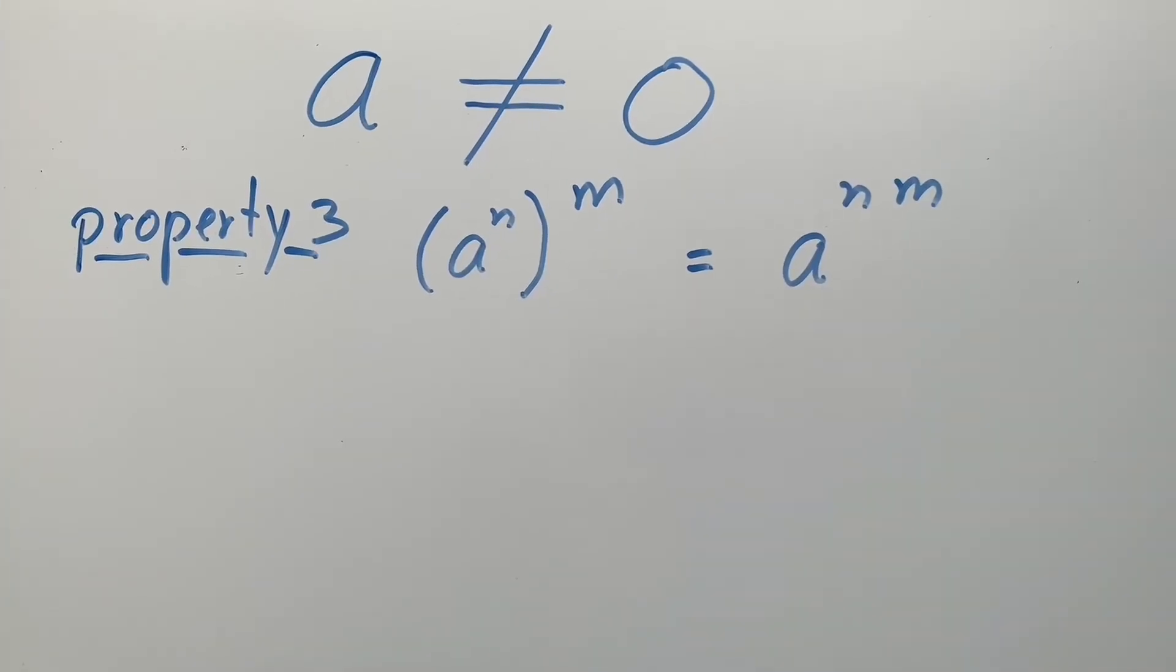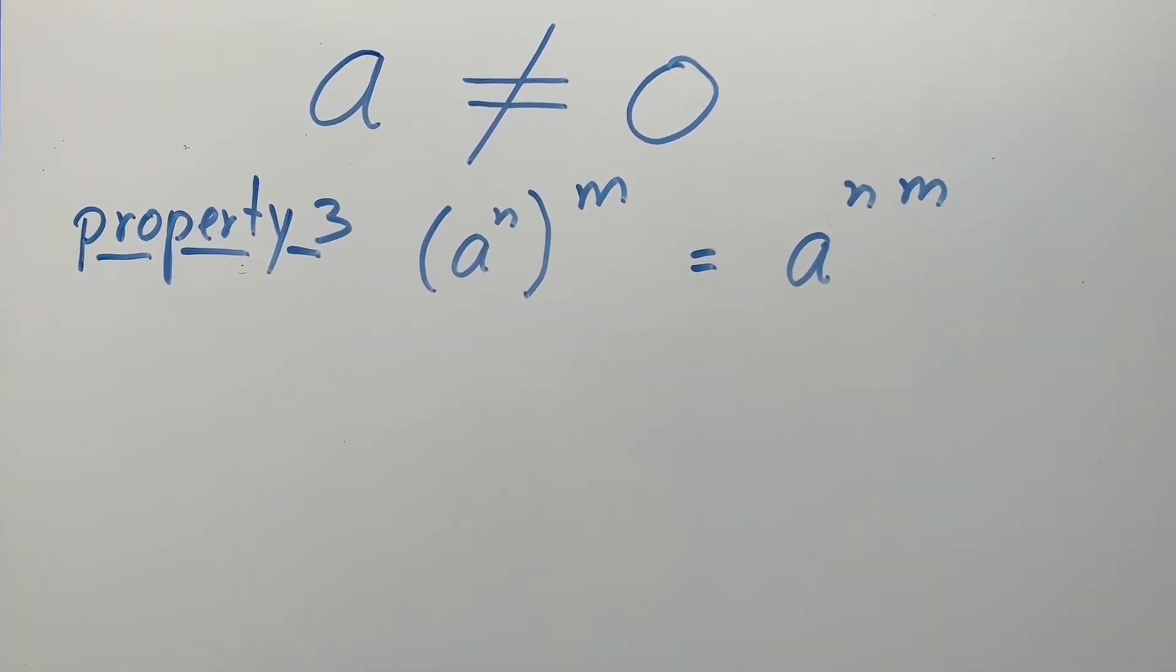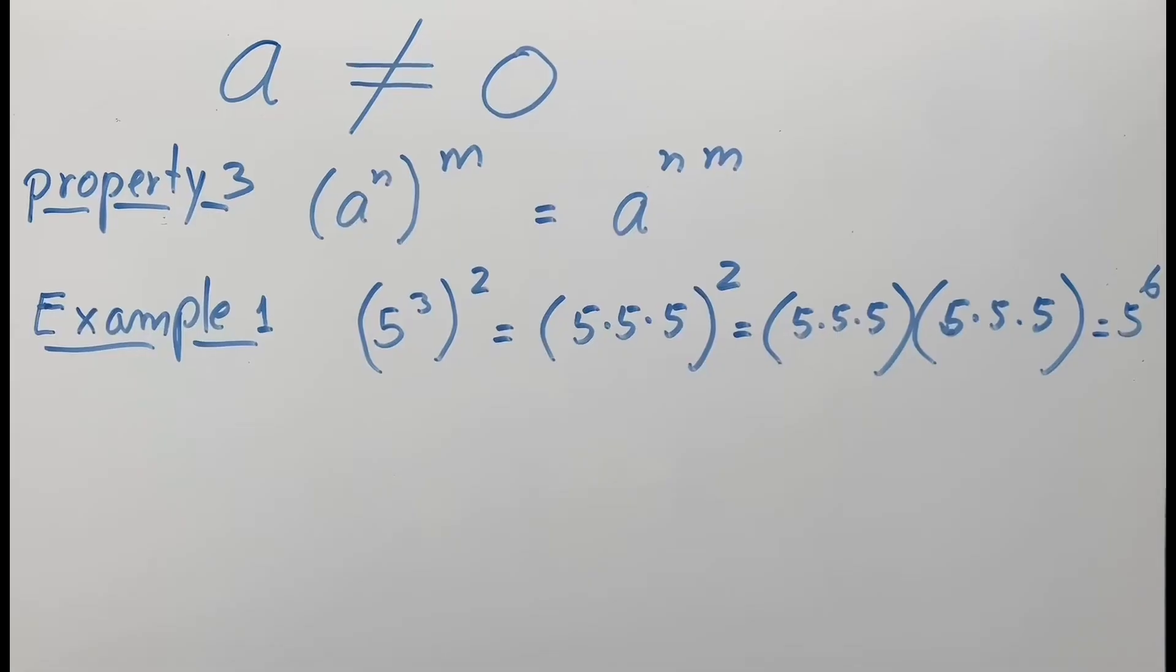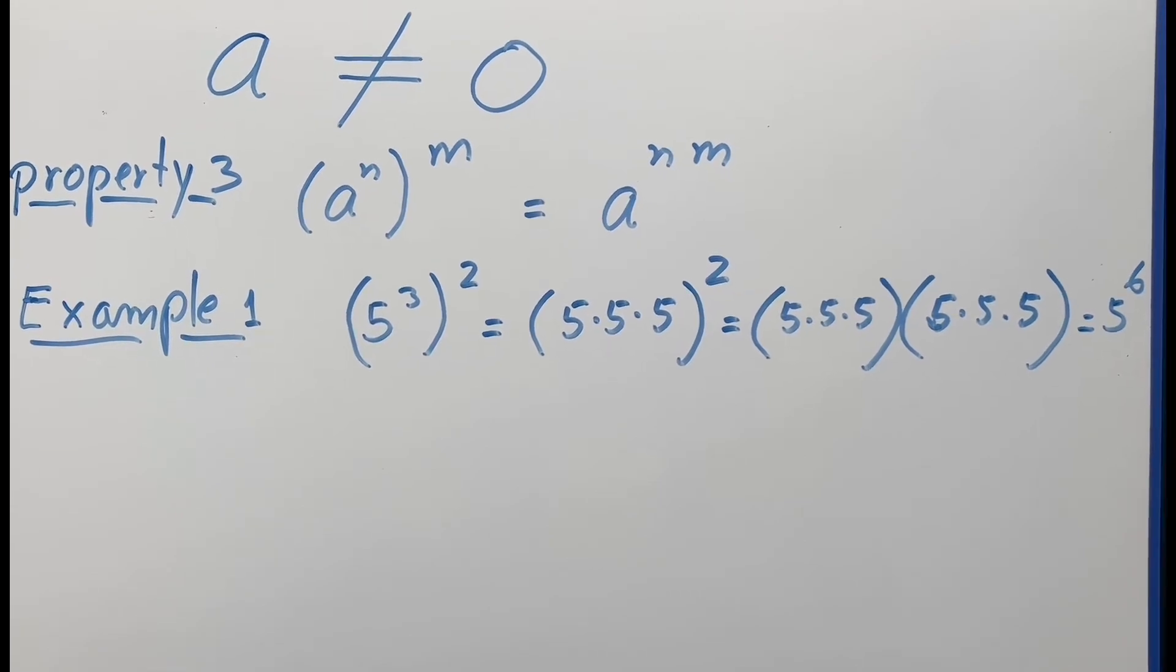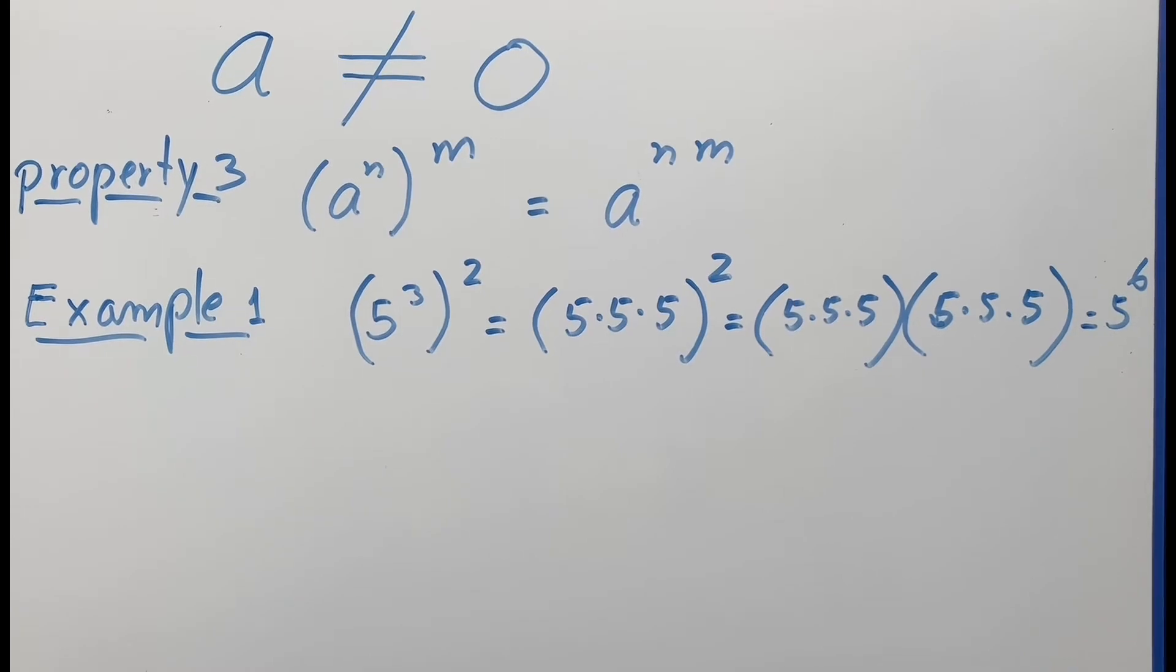Property 3: if you have a quantity raised to a power, then raised to another power, multiply the exponents. Example 1: 5 cubed squared equals 5 to the 6th power.